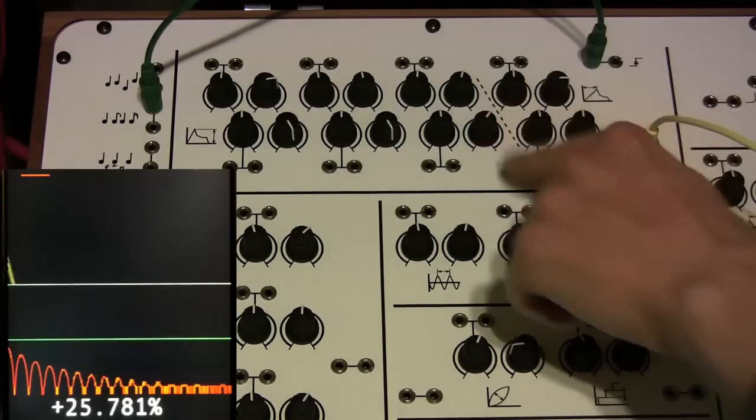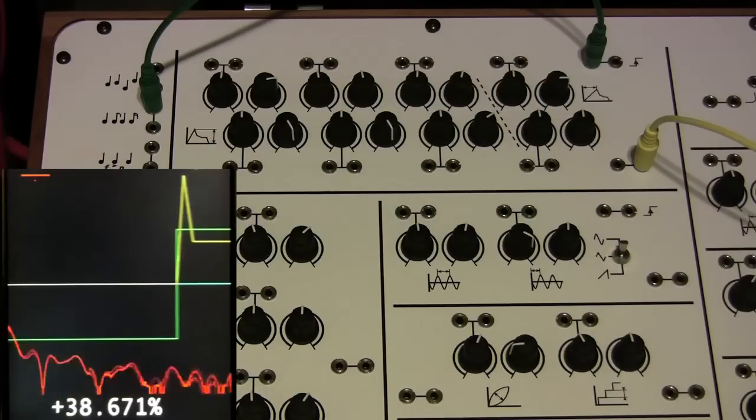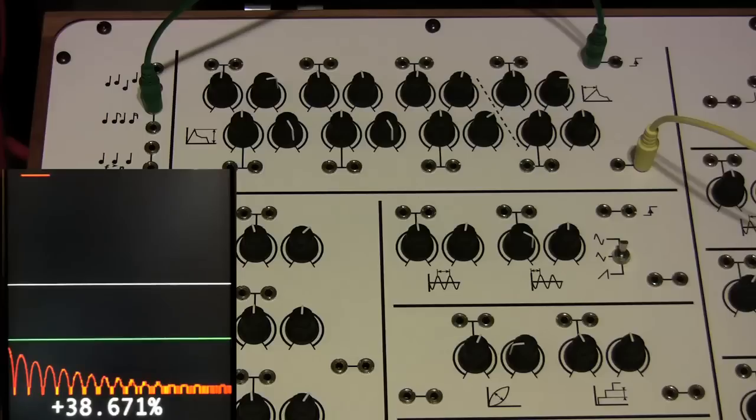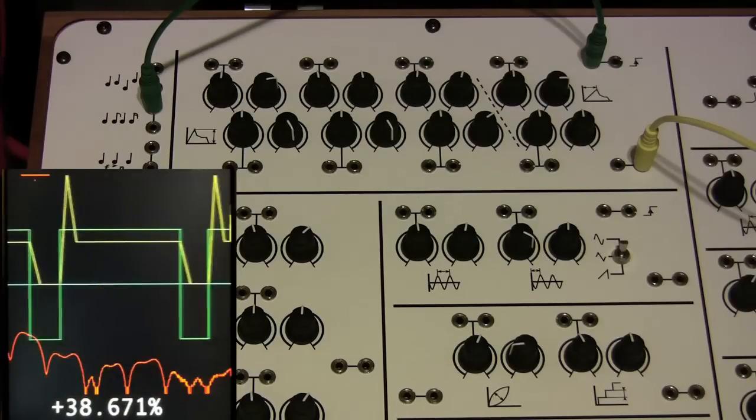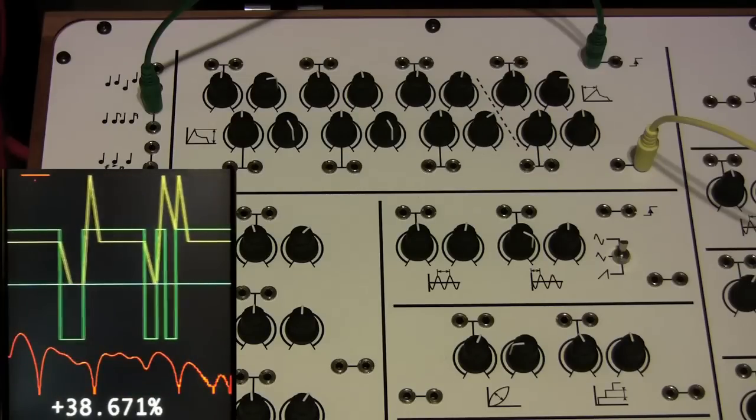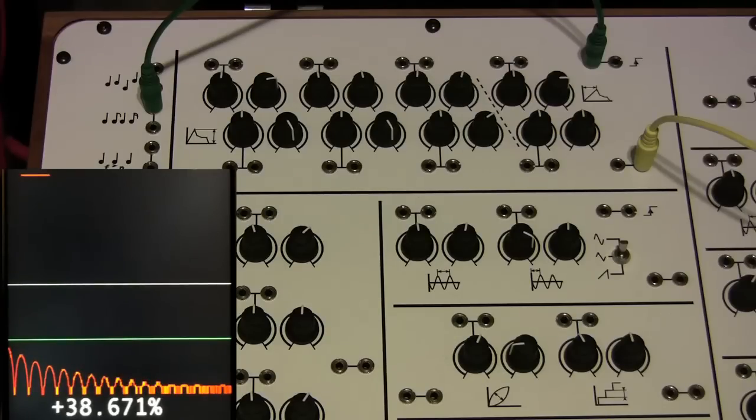Setting a level less than 100% for the stage before release, we get the classic attack, decay, sustain, release type of envelope. This is the most commonly used envelope in modern synthesizers for its versatility, as modifying its parameters can create the attack decay and attack release types as well.